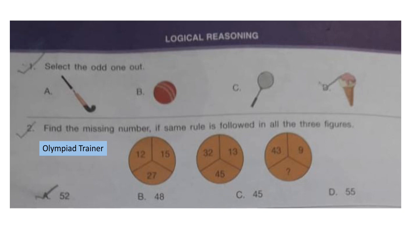Question 2: Find the missing number if the same rule is followed in all three figures. If you look at the first two figures, the above two numbers are added and the number below is the sum of these two numbers. 12 plus 15 is 27; 32 plus 13 is 45. So similarly, 43 plus 9 will replace the question mark. The correct answer is option A: 52.